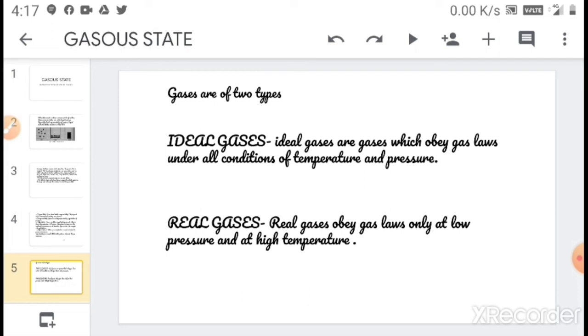Ideal gases are gases which obey gas laws under all conditions of temperature and pressure. Real gases obey gas laws only at low pressure and at high temperature. Ideal gases are theoretical gases.